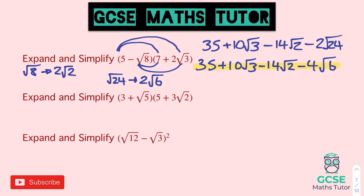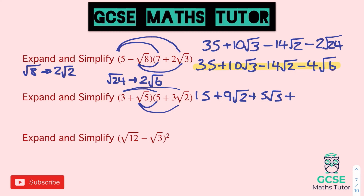On to the next one. Expanding: 3 times 5 is 15. 3 times 3 root 2 gives 9 root 2. Root 5 times 5 is 5 root 5. And 3 root 2 times root 5 becomes 3 root 10 — all positive. Looking at the root terms: root 2, root 5, and root 10 — none of those simplify, so none of them join up. Final answer: 15 plus 9 root 2 plus 5 root 5 plus 3 root 10.